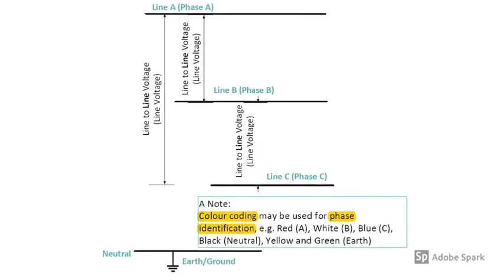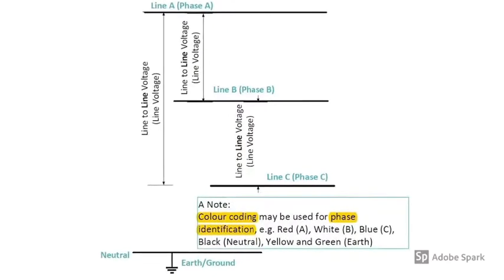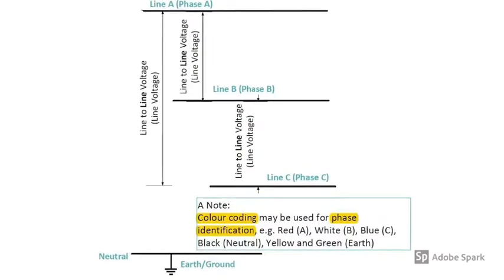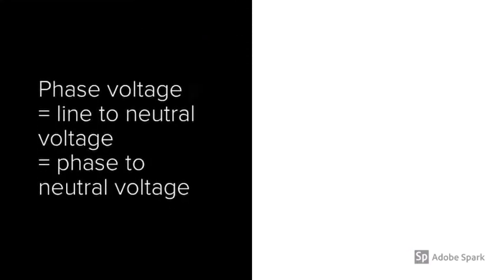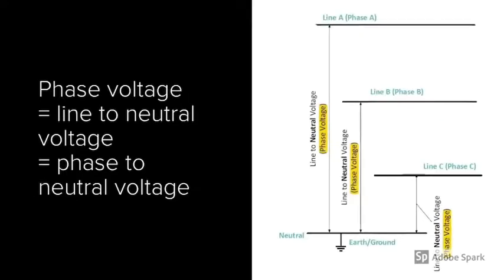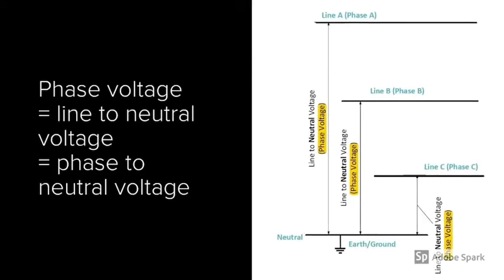Different companies or utilities may use color coding or numbers to identify phases. For power grid, phase voltage is line-to-neutral voltage or phase-to-neutral voltage. It can be voltage between any line and neutral.